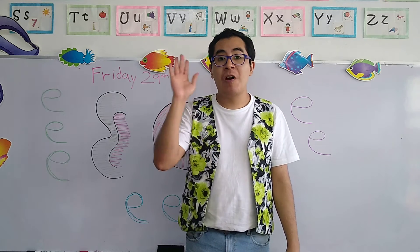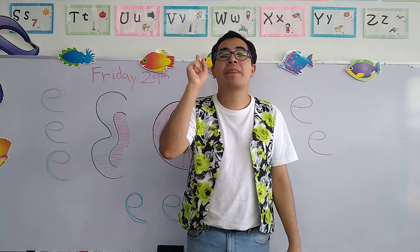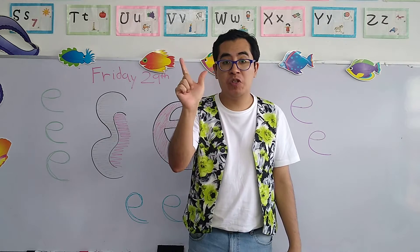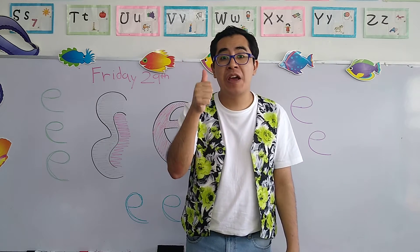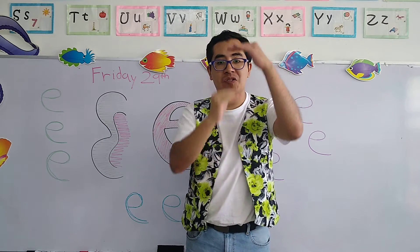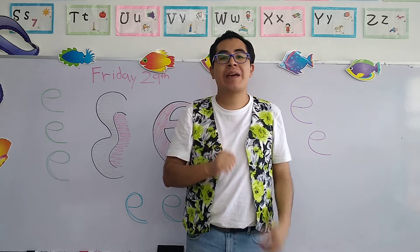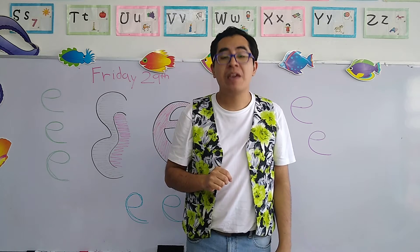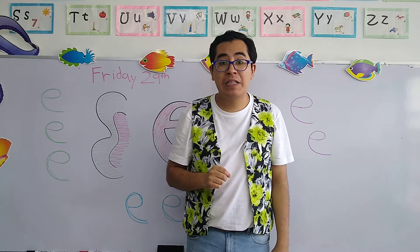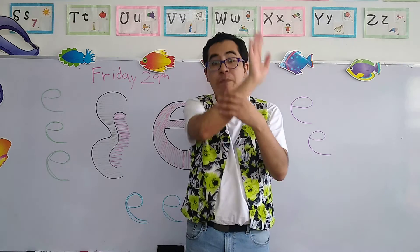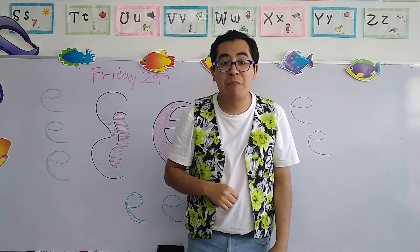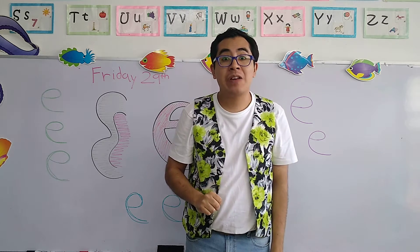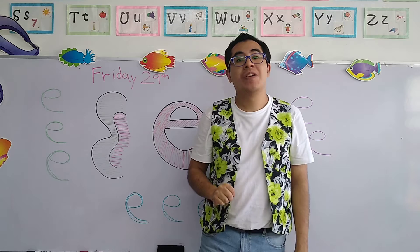Now remember, the vowels are five, and they are A, E, I, O, and U. We started with the first two. Remember the letter A — capital A, small a. The letter E — capital E. And we have two objects for capital E: the elephant, which is the animal with the big trunk, and the egg. Remember, the dinosaur egg — when it cracks, it delivers a baby dinosaur.